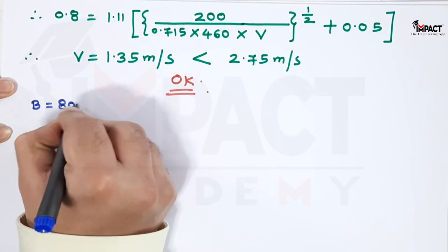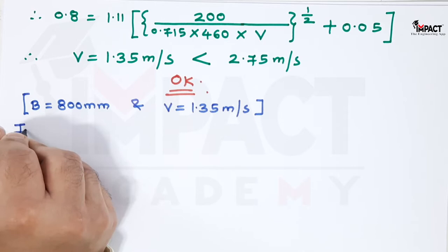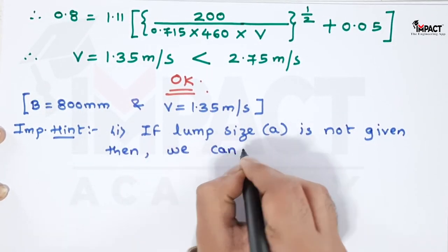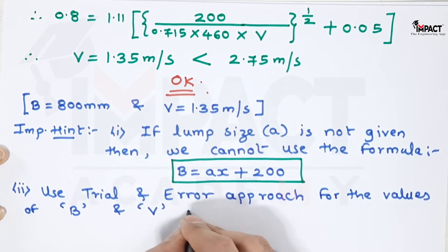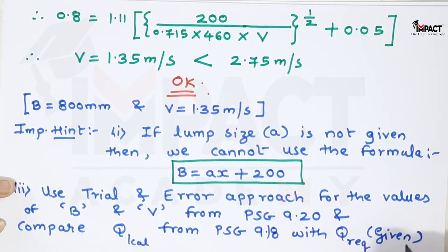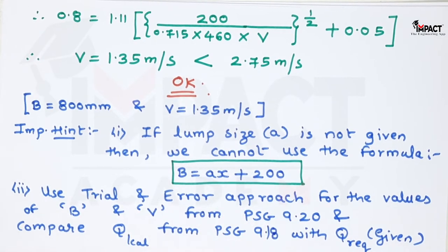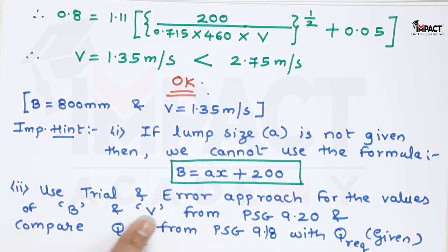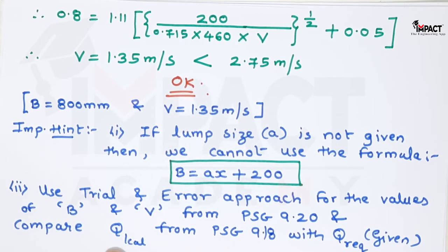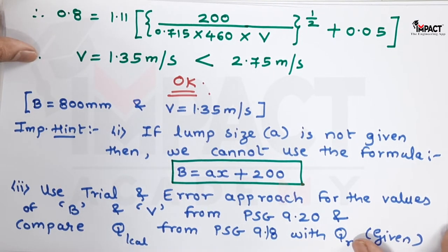The final belt width is 800 mm and velocity is 1.35 m/s. Important note: if the lump size is not given, the empirical width formula cannot be used. Instead, use trial and error — select width and velocity from PSG 9.20, calculate Q from PSG 9.18, and compare with the required capacity. Step 1 is now complete.